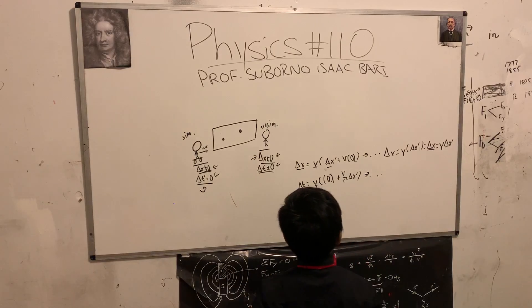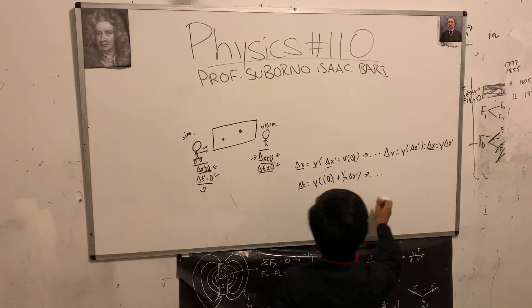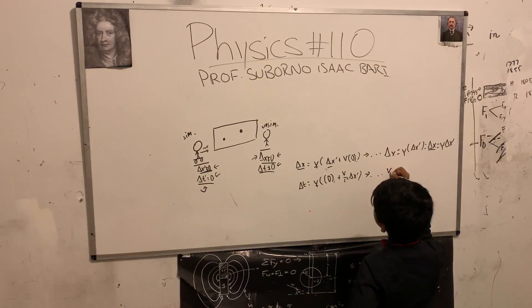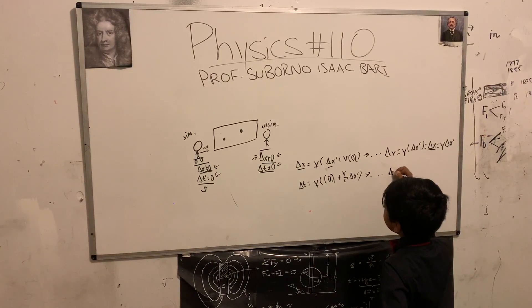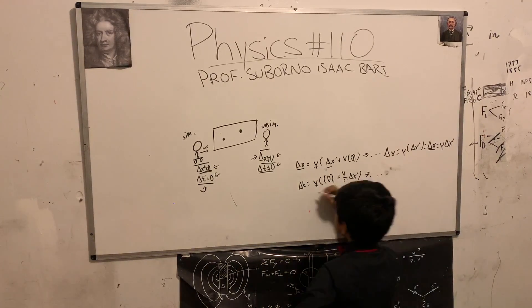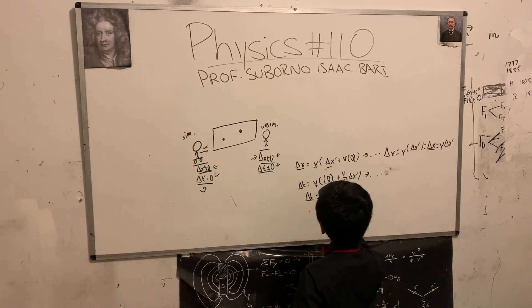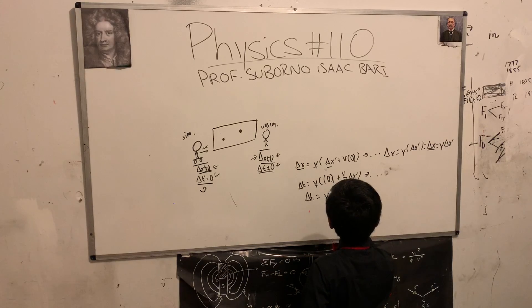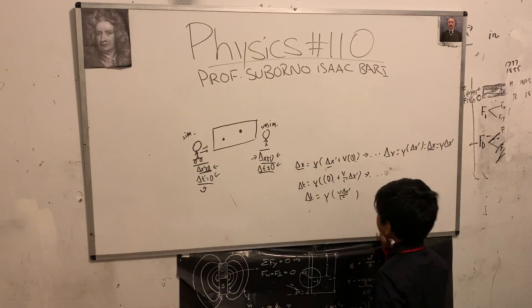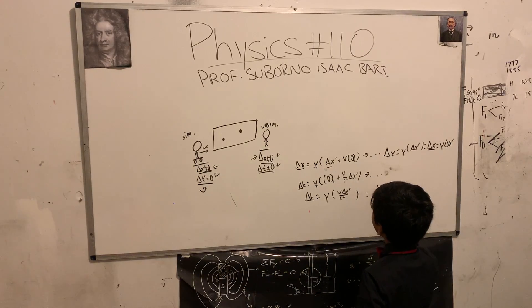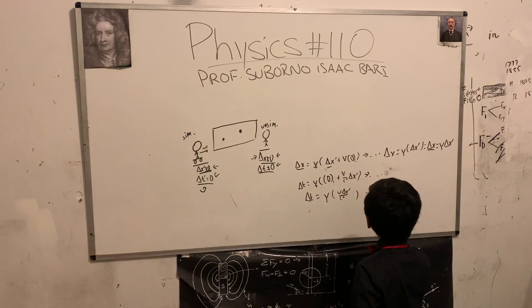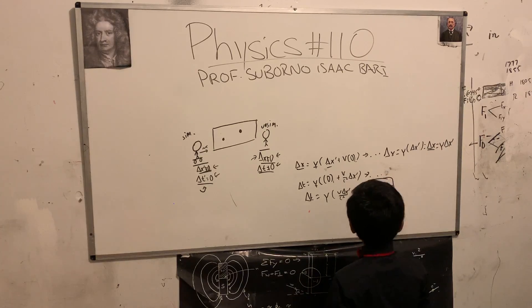Now we are going to simplify this one here, which will give us delta t is equal to gamma times v over c squared delta x prime.